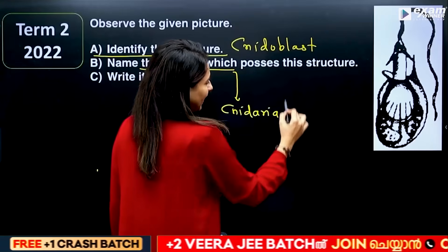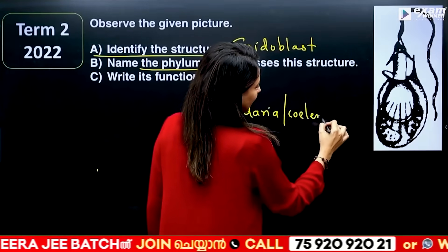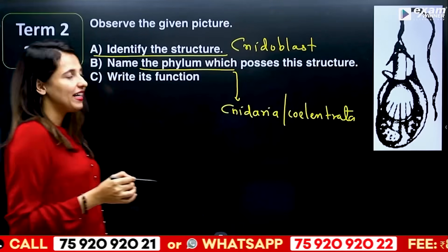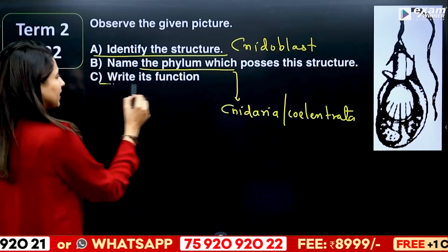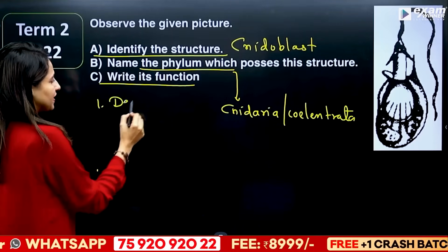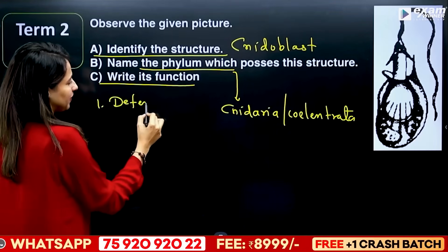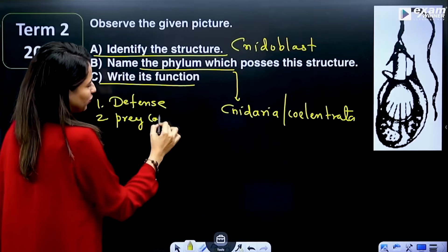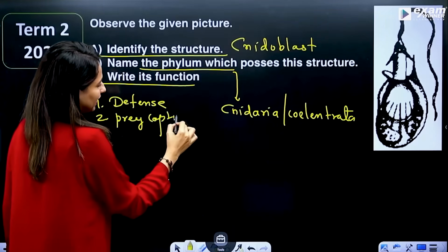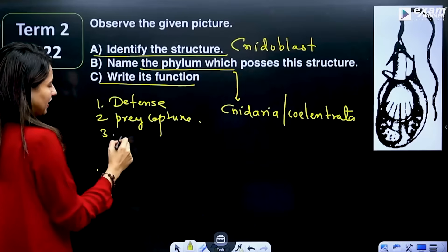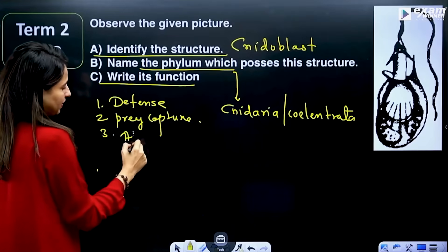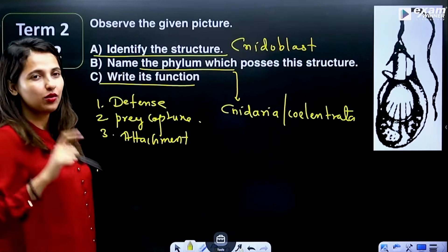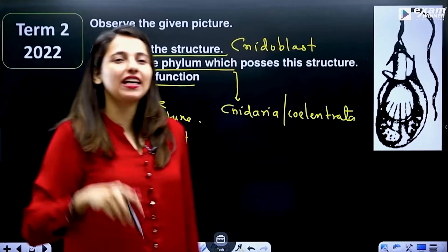The nematoblast is found in Cnidaria. Write its function: it helps in defense and prey capture, and also helps in attachment.